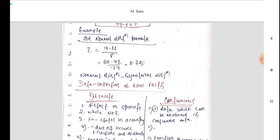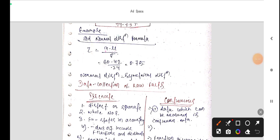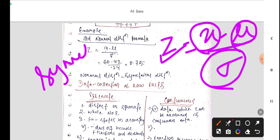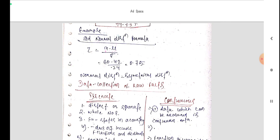For example, we can see standard normal distribution formula, which we studied last class. z equals x minus mu by standard deviation. x is our arithmetic mean, mu is our population and standard deviation. By putting the value, the answer came as 0.75. Normal distribution is equal to symmetrical distribution.